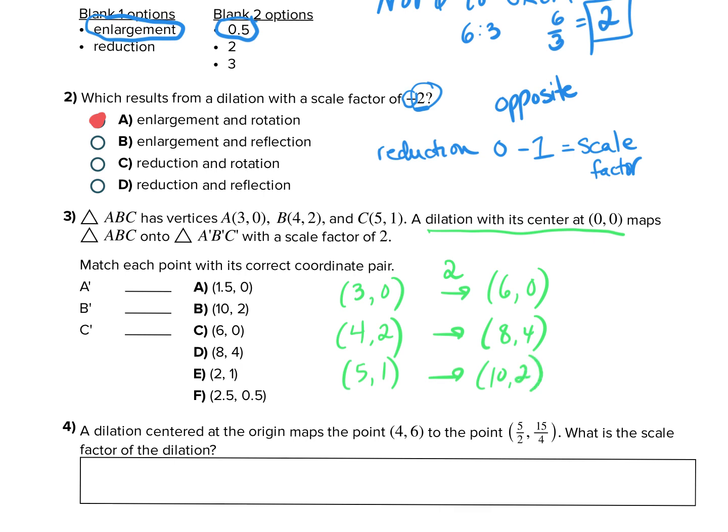So all we did was multiply. I multiplied both three by two and then zero by two. Every value gets multiplied by two. So A is six, zero, that's C. Four, two becomes eight, four, and that's D. And five, one becomes ten, two, which is B.